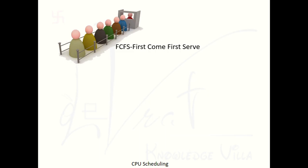It's similar to the banking queue — whoever arrives at the bank first gets served first. Same fundamental applies here: whatever process is available in the ready queue, whichever process arrived first will get the CPU first. This technique is known as First Come First Serve CPU scheduling.